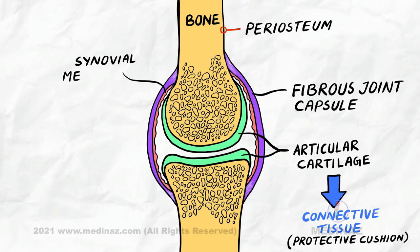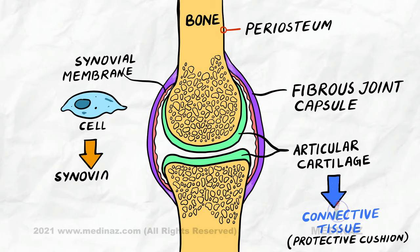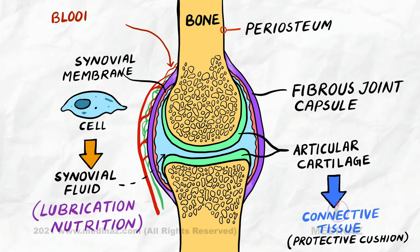It has cells which produce synovial fluid in the synovial cavity. Here you can see the synovial cavity. Synovial fluid helps in lubrication and provides nutrition. Synovial membrane also has blood vessels and lymphatics running through it.